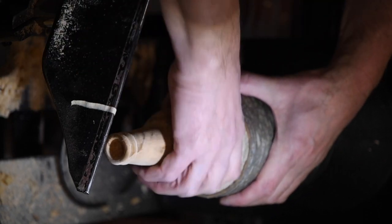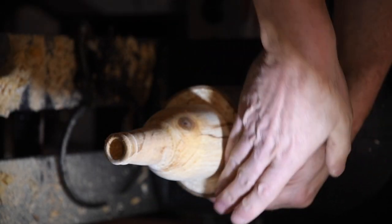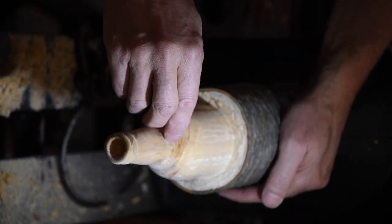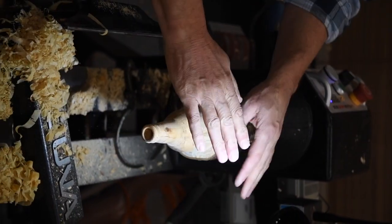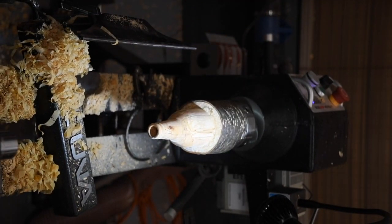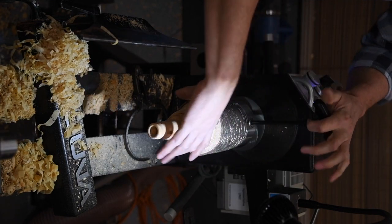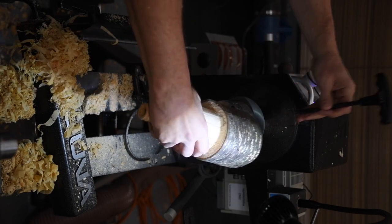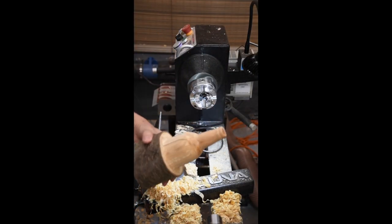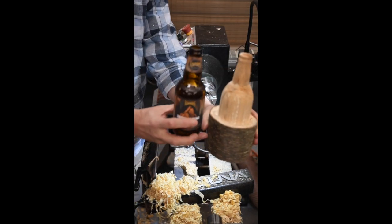Now normally I would spend whether it's 10 minutes or an hour sanding, getting it perfectly smooth, removing all the little chips. But for the demo purposes, this bottle is done. Now I'm going to remove it, show everybody what it looks like. So now we have a bottle coming out of a branch.